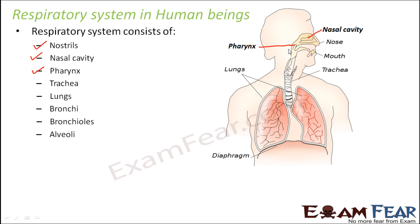The three portions are nasopharynx, oropharynx, and laryngopharynx. Nasopharynx is the portion of pharynx which lies just behind the nasal cavity. Oropharynx is the part near the oral cavity, and laryngopharynx is the lower portion. After pharynx comes the trachea — a tube-like structure.